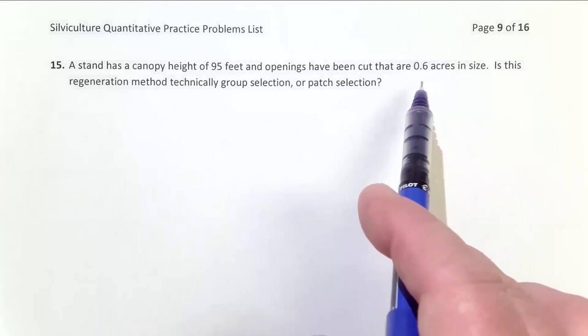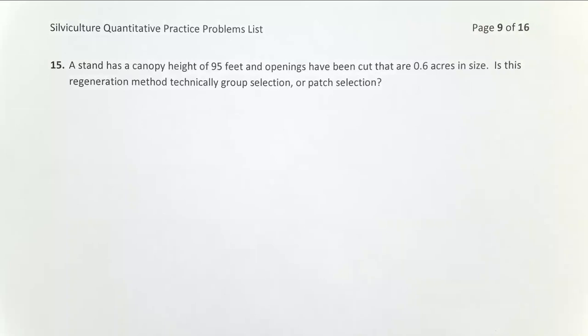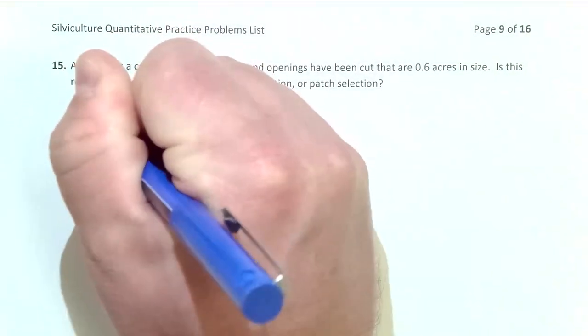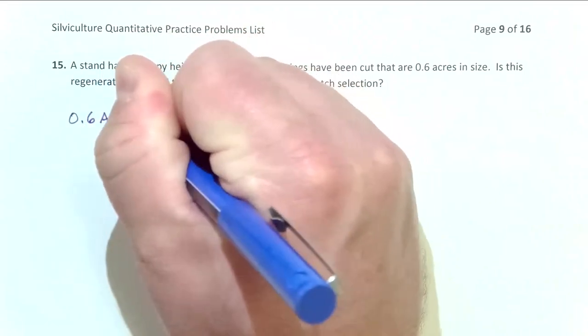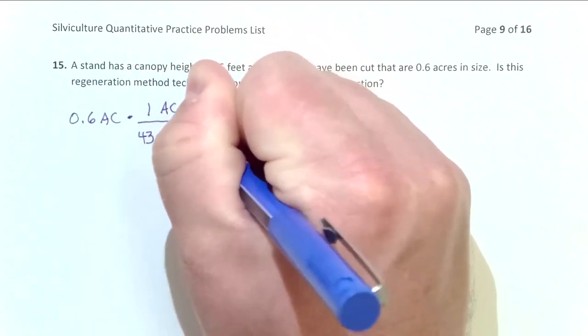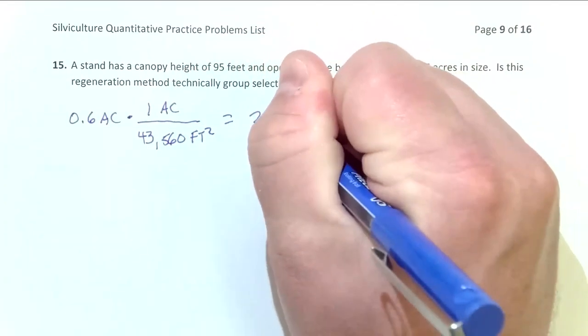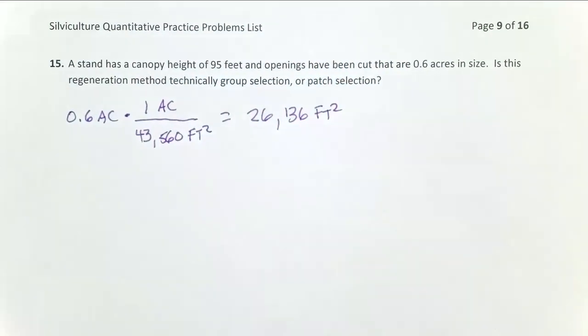So first off, what I want to do is I want to go from this area in acres to a radius in feet. And so to do that, my first step is going to be to take my 0.6 acres and multiply it by one acre equaling 43,560 feet squared. And that equals 26,136 feet squared. So that's the actual size of the openings that we're making in this stand in square feet.